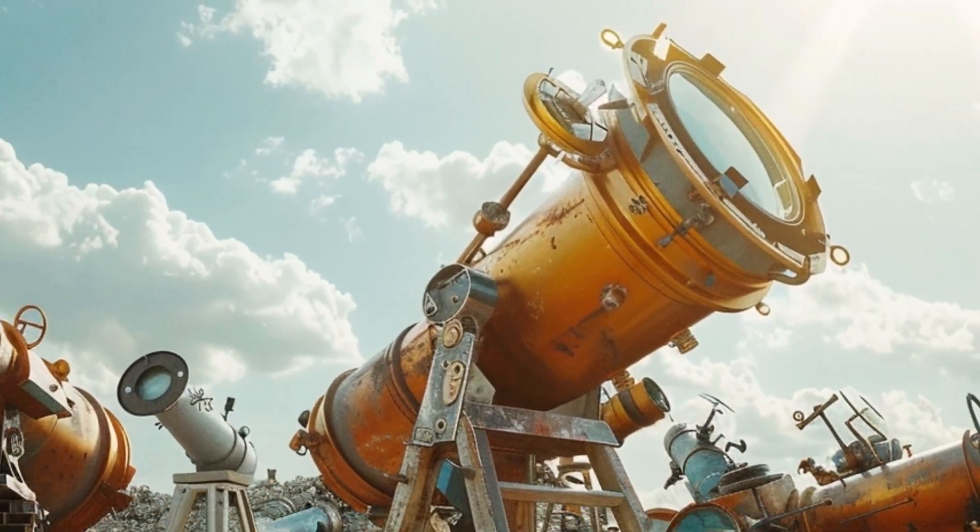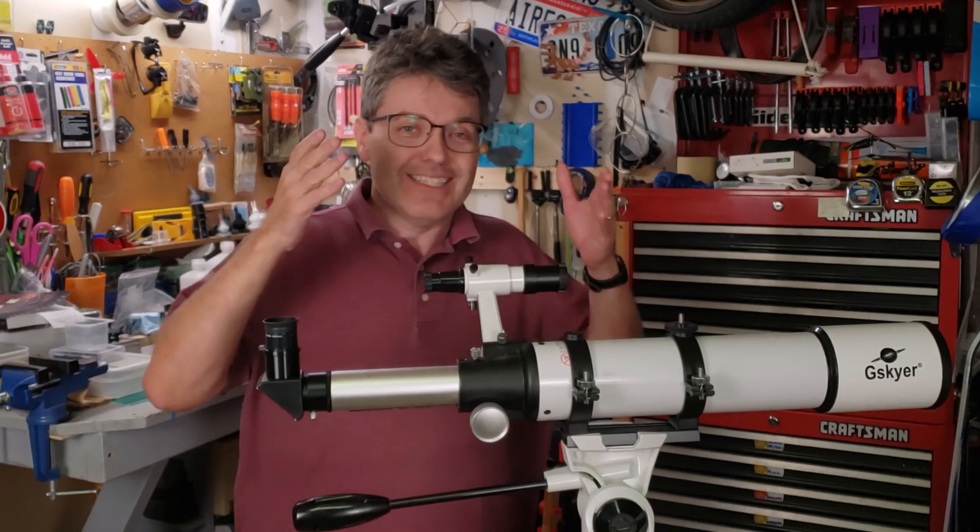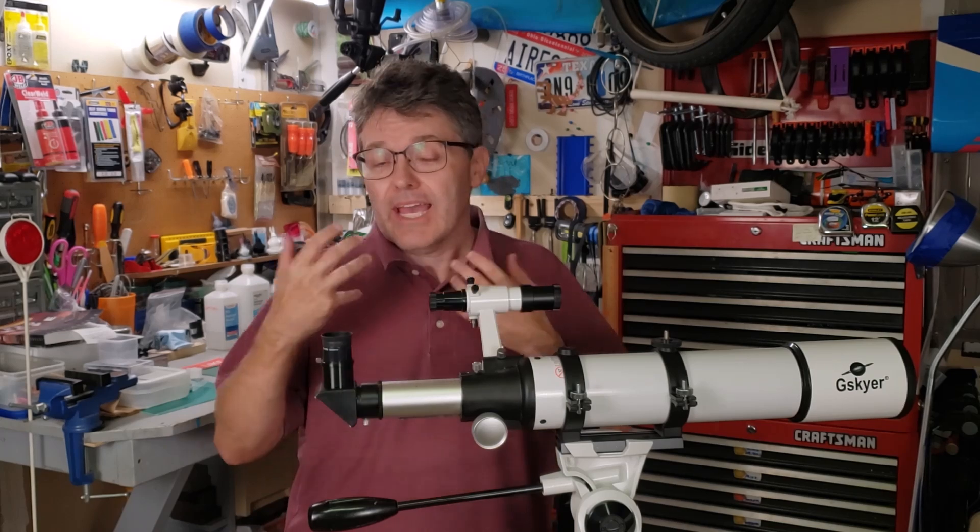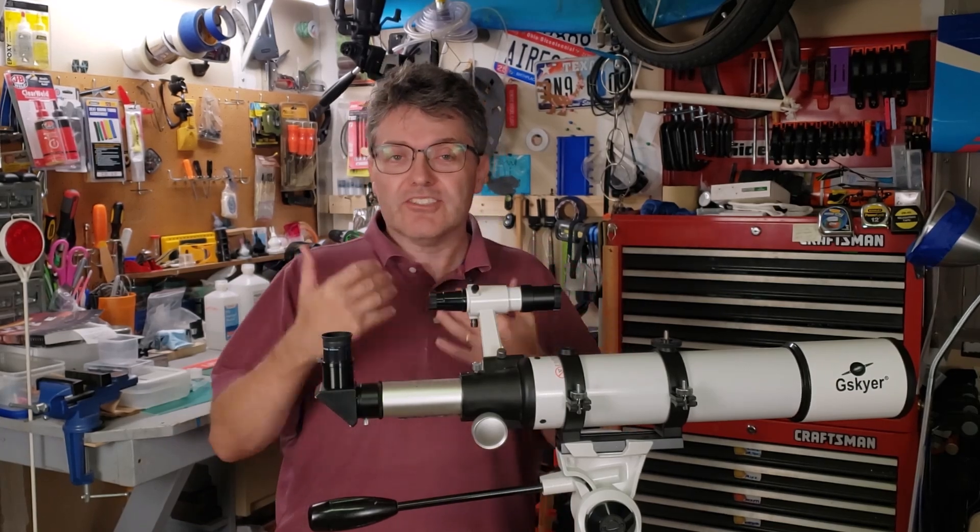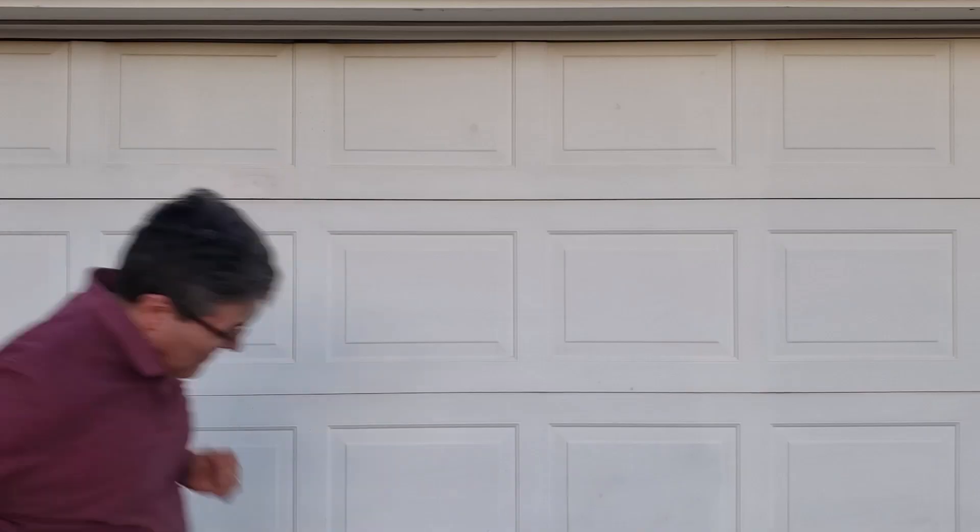The number one cause of this damage is from the telescope falling over while the focuser tube is extended. I had this happen to me once during a star party when it was exceptionally windy, and on that day I had a very light refractor telescope that blew over.